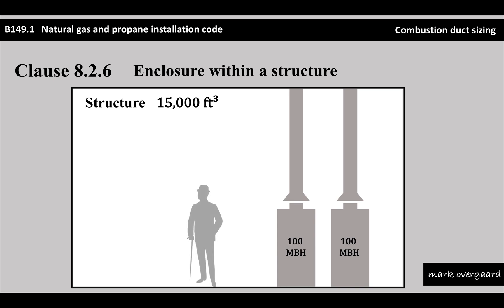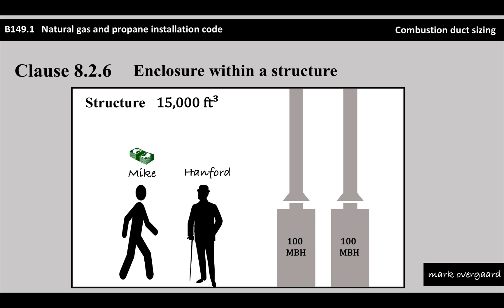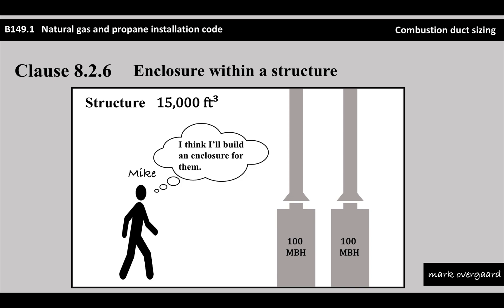Now we have this guy, Hanford. Hanford owns the building. Along comes a guy by the name of Mike. Mike wants to buy this building and Hanford agrees. So Mike gives him some money - goodbye, Hanford. Now Mike's thinking, there are these two appliances in the middle of this warehouse. I don't really like the look of them. I want to have them hidden. Maybe I'll build an enclosure around them. So he goes and does that.